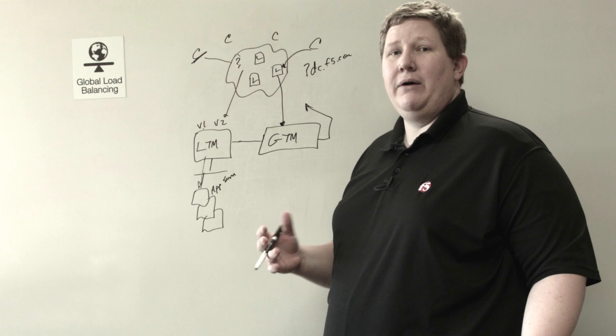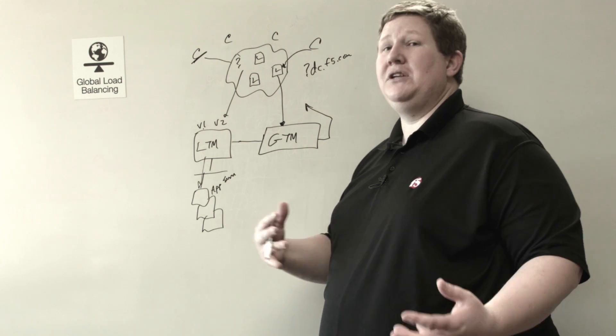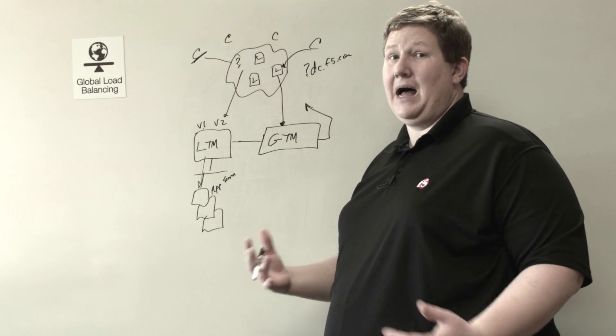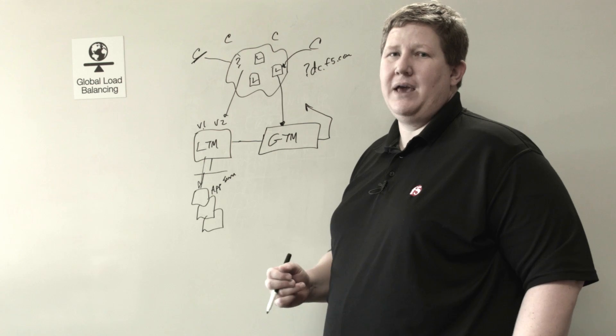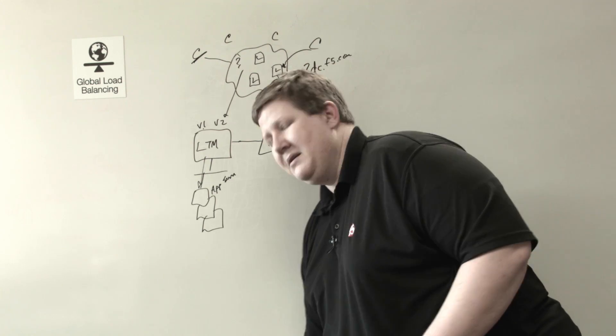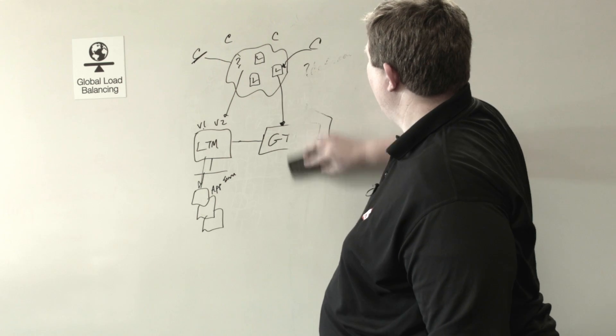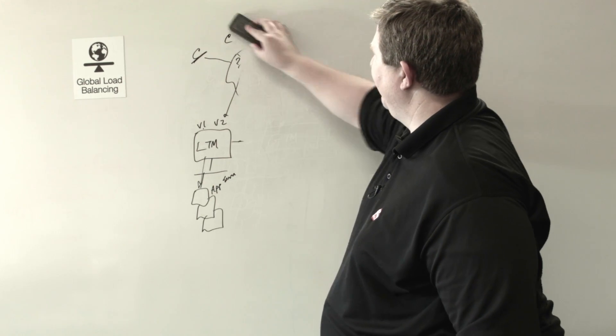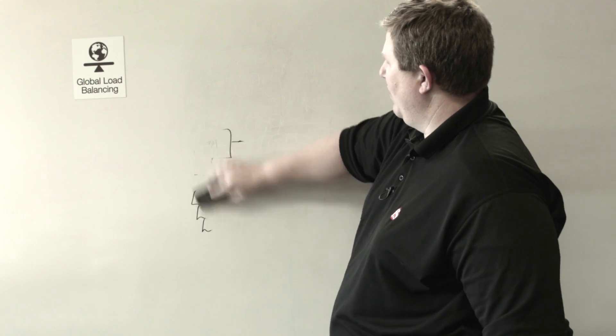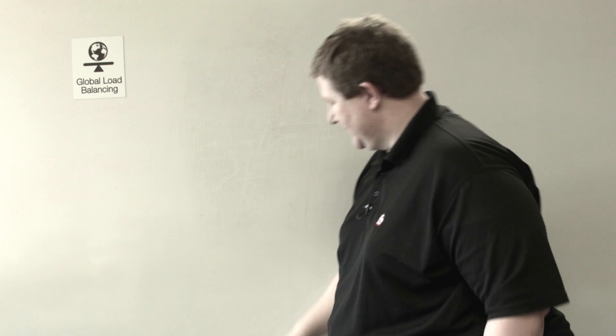And so what we're going to talk about in this series is how GTM comes up with answers. There's a lot of algorithms with GTM at the pool level. That's another key concept I want to talk about before we get into the load balancing algorithms: the concept of having tiers with the decision-making process.